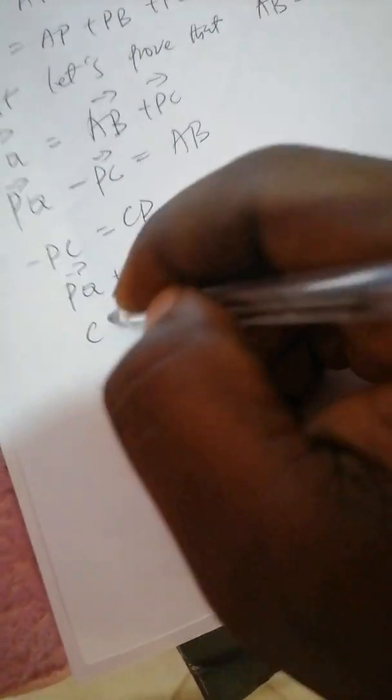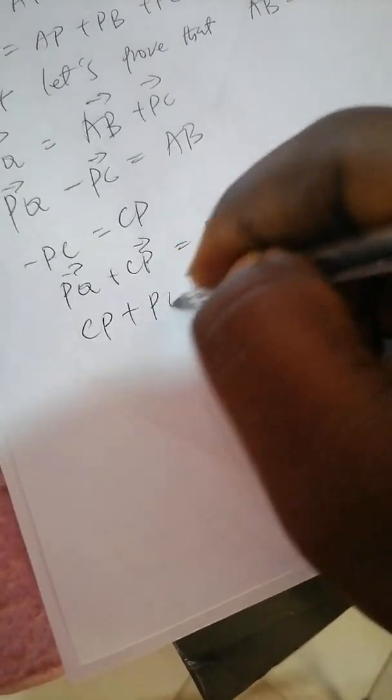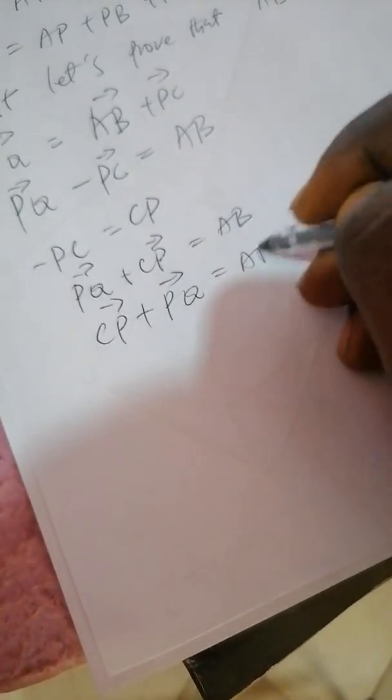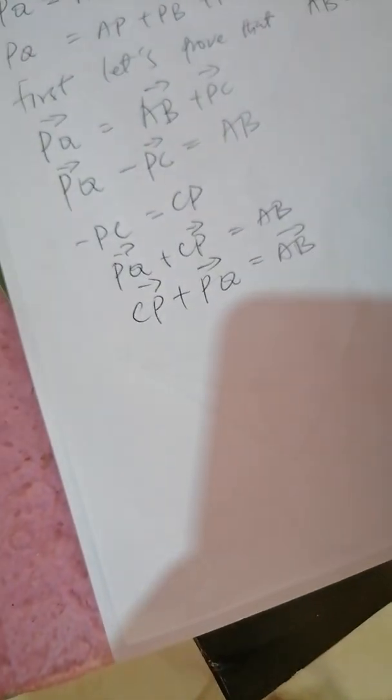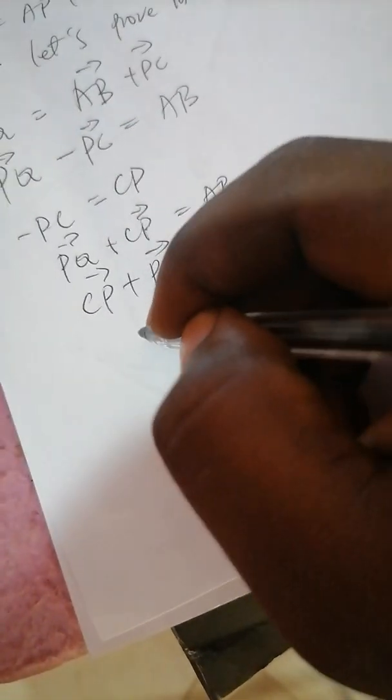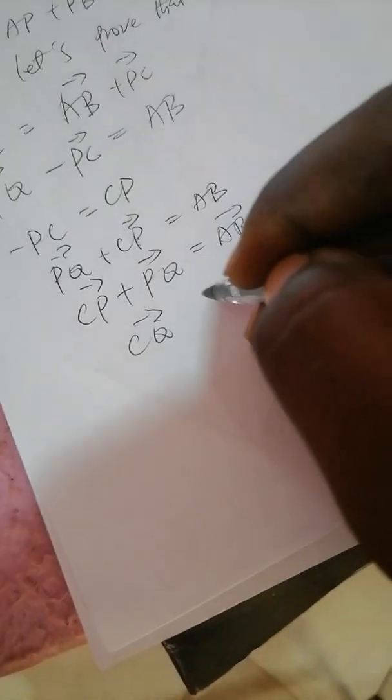I can make it the same as CP plus PQ, and it's equal to AB. So what is CP plus PQ? CP plus PQ is just CQ, and it will be equal to AB. So I have proven that my CQ is equal to my AB. That's my first part.